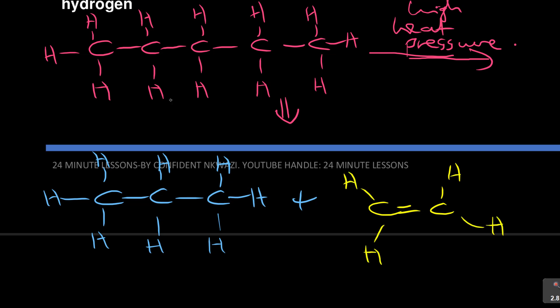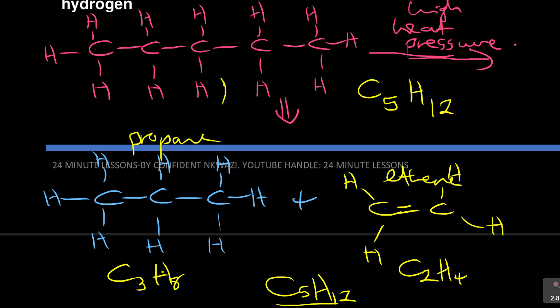Now the best thing is to look at the molecular formula. This is C5H12. Let's look at this one: C3H8 and this one is C2H4. But if you add three plus two, it's C5, and eight plus four is H12. Do you see that? You can form propane and ethene from pentane. That is what the cracking does.